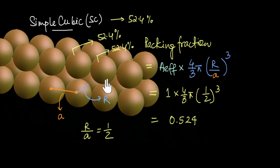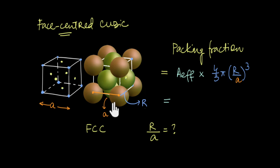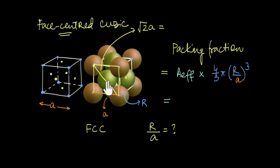For FCC, the corner atoms do not touch each other, so we can't get r/a from the edges. However, looking across the face diagonal, all atoms along that diagonal touch each other. This face diagonal is the diagonal of a square face, which equals √2·a, and it also equals 4r since those spheres are in contact. Therefore, r/a = √2/4 for FCC.